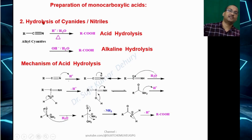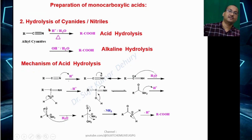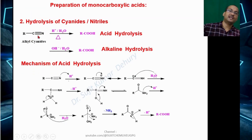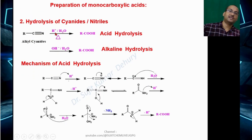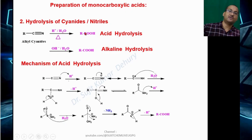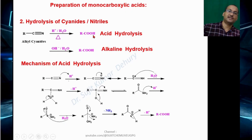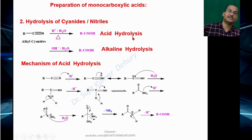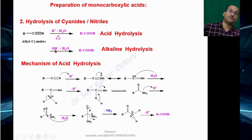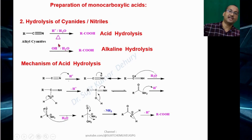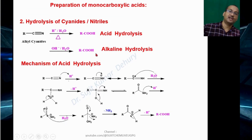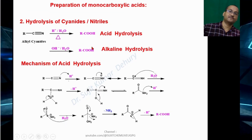The next method is hydrolysis of cyanides. Alkyl cyanide in the presence of H+ and water gives carboxylic acid — this is acid hydrolysis. Similarly, in the presence of OH− and water (alkaline medium), the product is also RCOOH, carboxylic acid — this is alkaline hydrolysis.